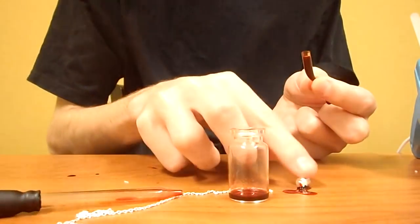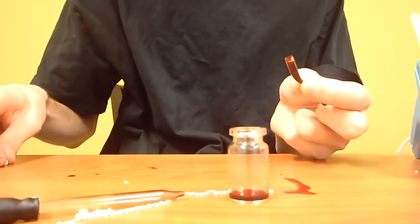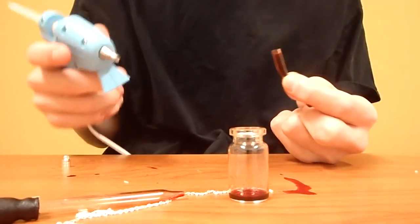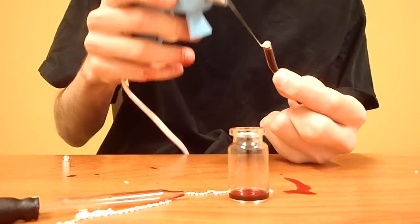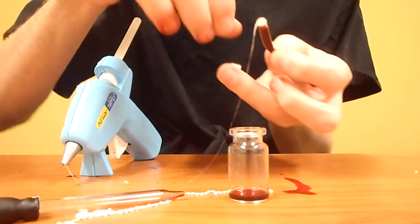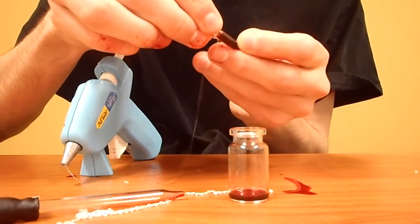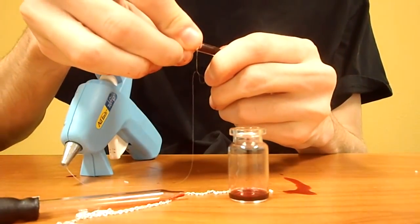After you've got it mostly filled, you should take your hot glue gun and cover the entire top, and then place your cap over it. You want to do this quickly so you get a good seal.